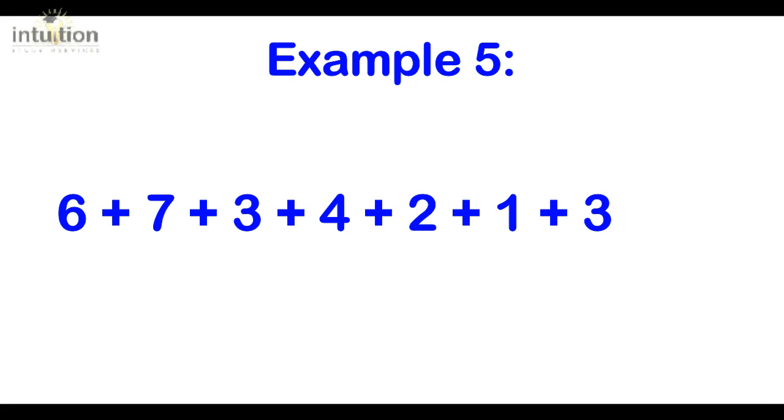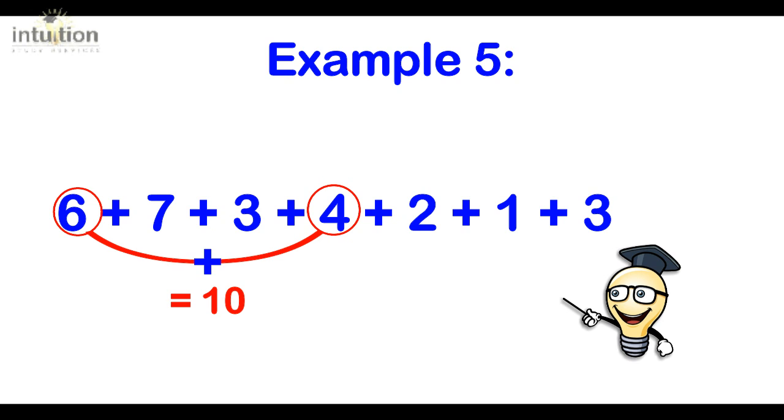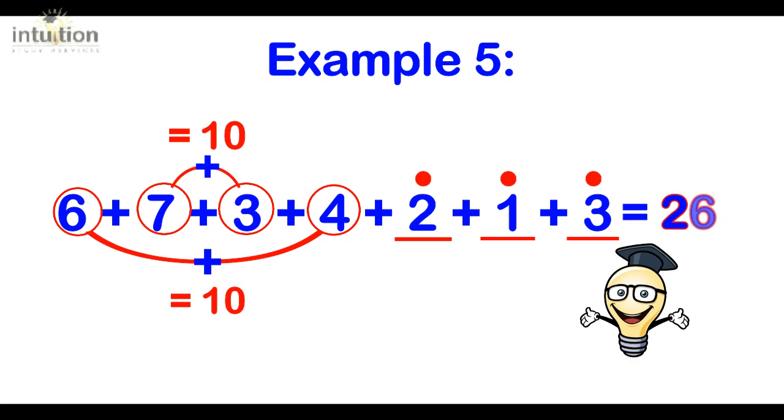Let's try another string of numbers. Let's make it slightly bigger. So we've got 6 plus 7 plus 3 plus 4 plus 2 plus 1 plus 3. Let's start by complementing. The 6 complements with the 4, that's 10. The 7 complements with the 3, that's another 10. So we've got 20 there. Then we've got 2 and 1 and 3, that makes 6. So the total is 26.